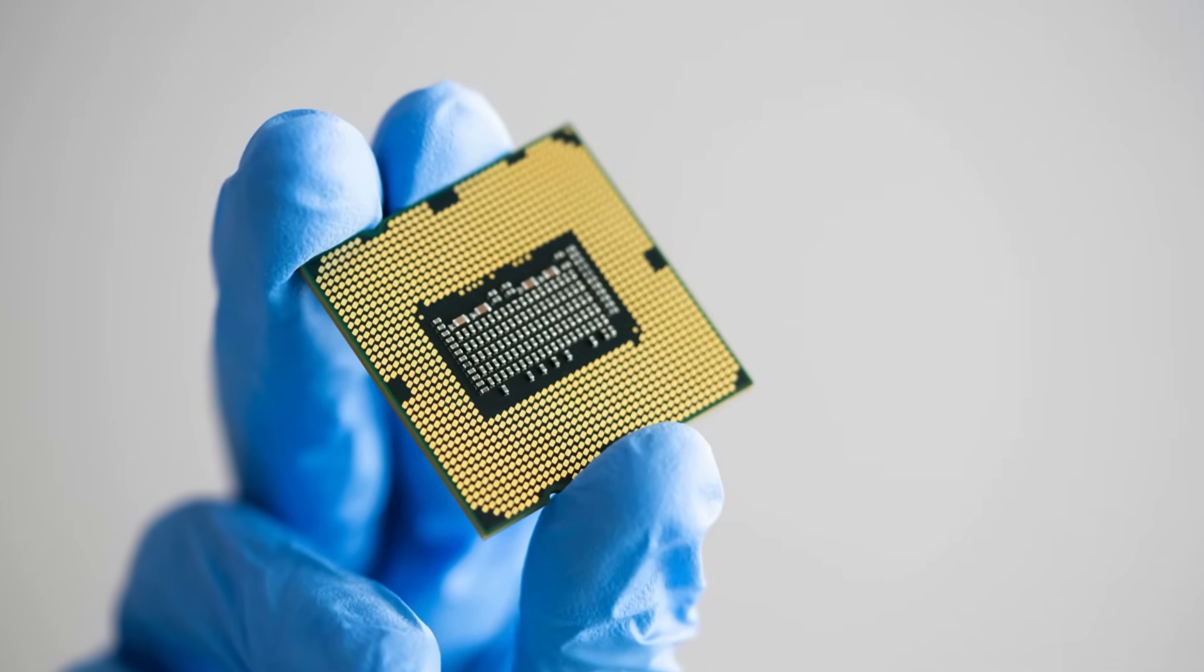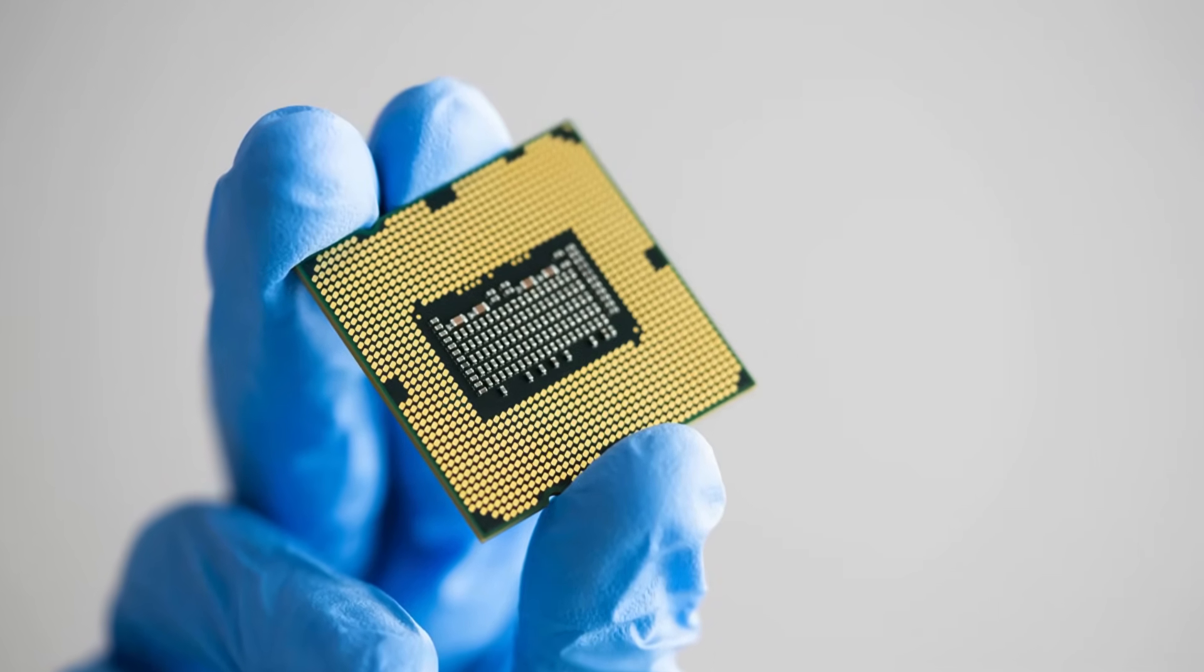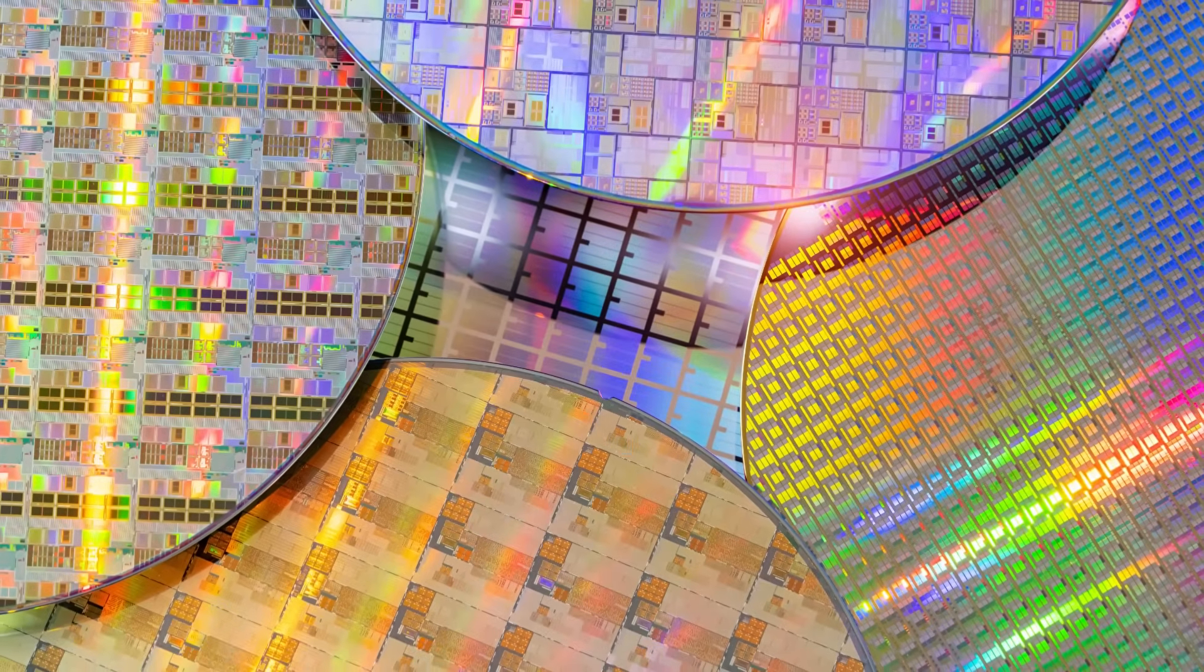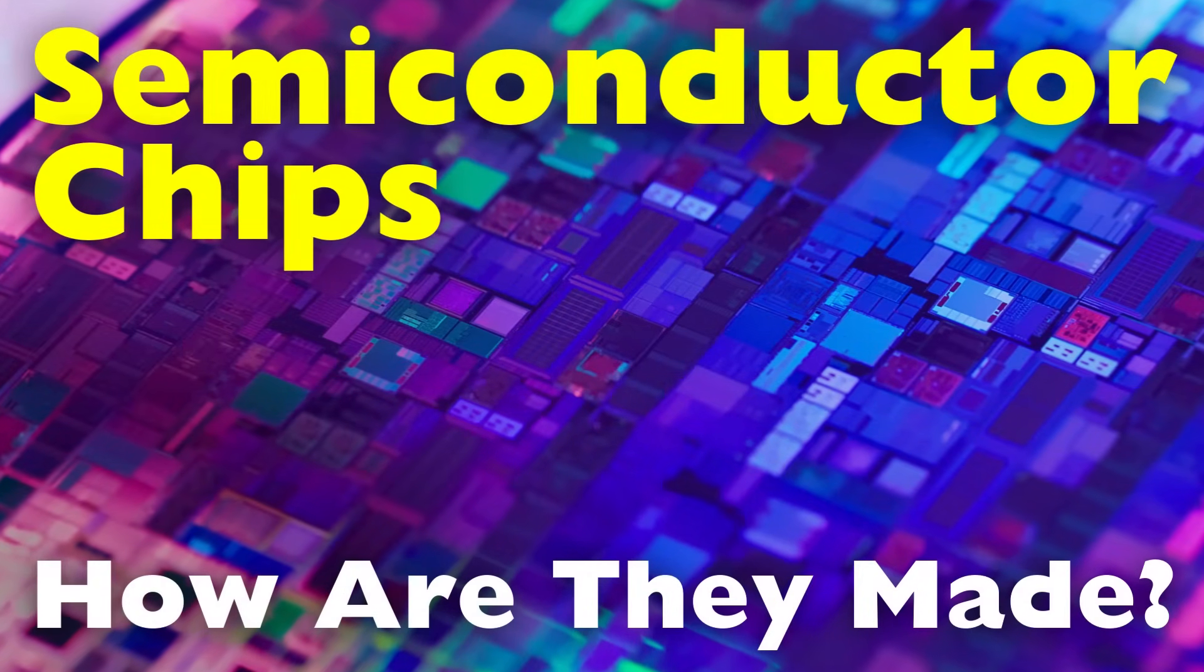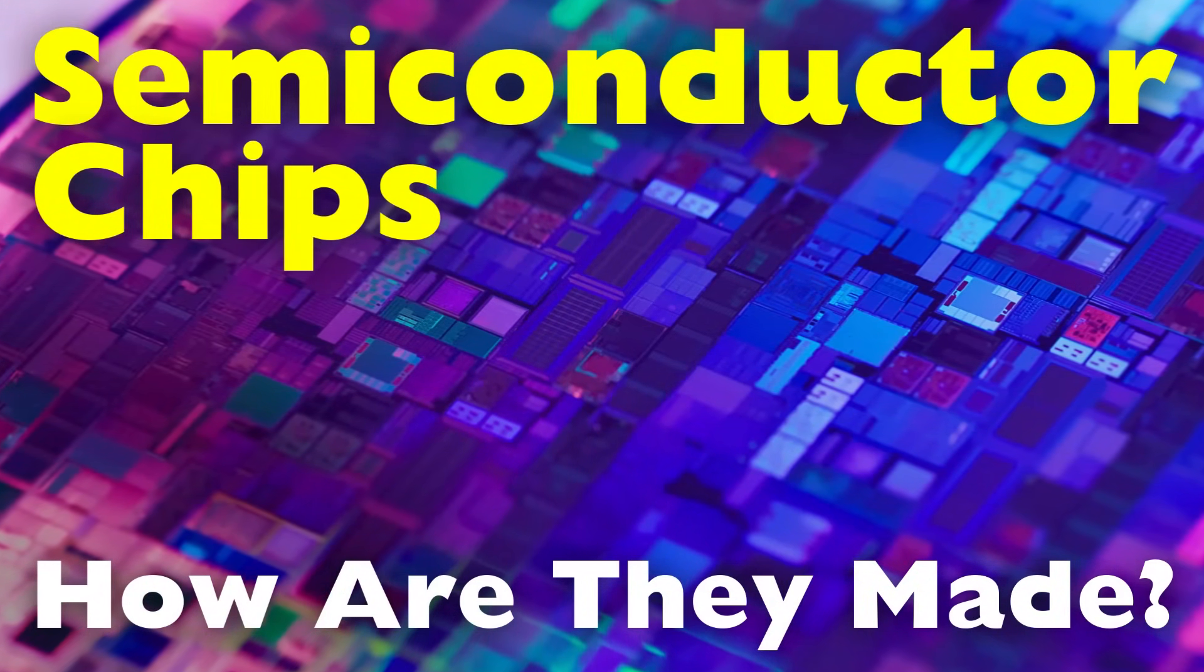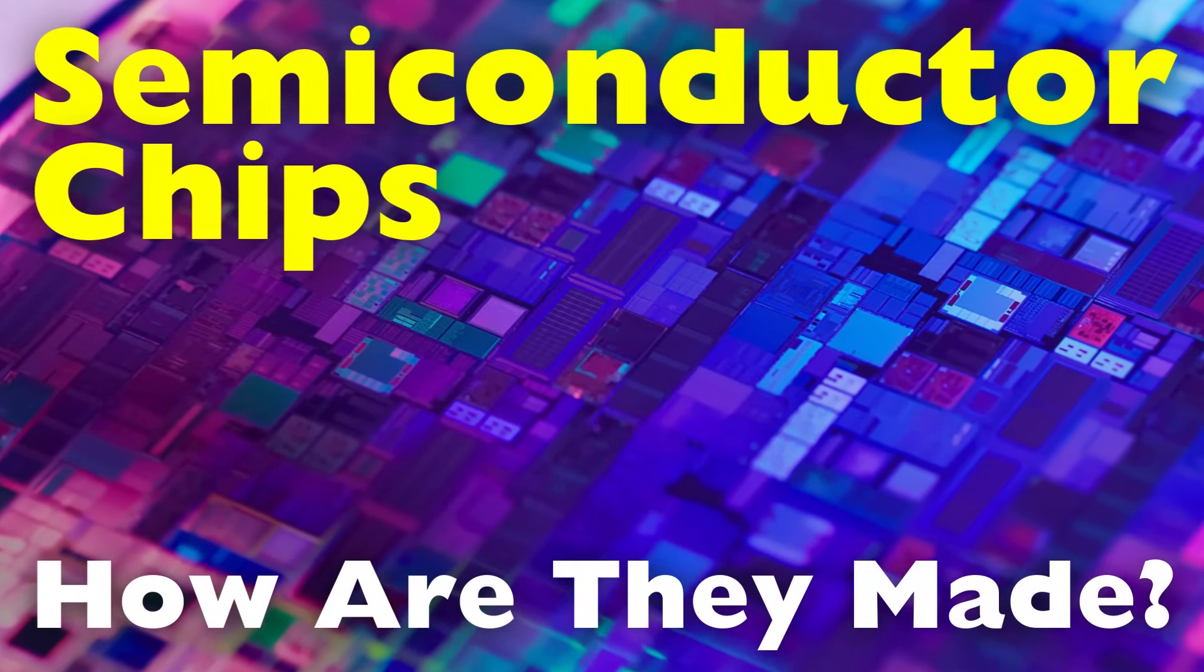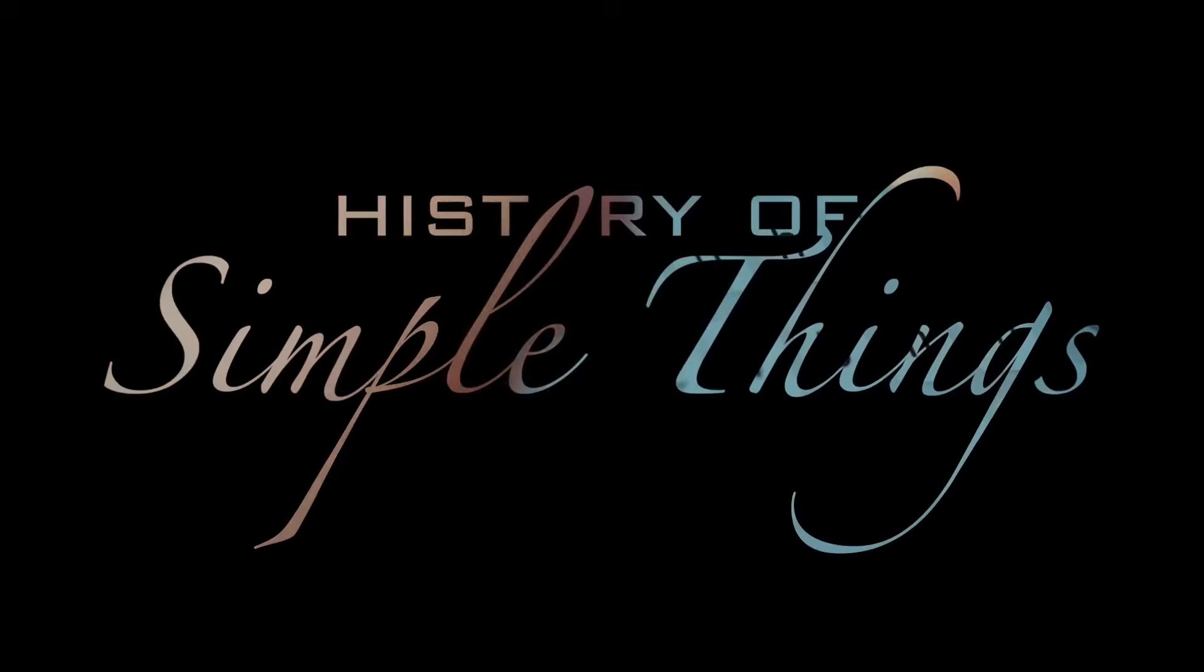Every step must be carried out with extreme accuracy as even the smallest imperfection can render a chip defective. In this video, we'll take a closer look at how semiconductor chips are made right here on History of Simple Things.